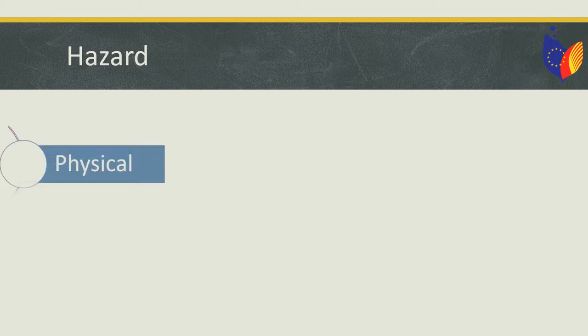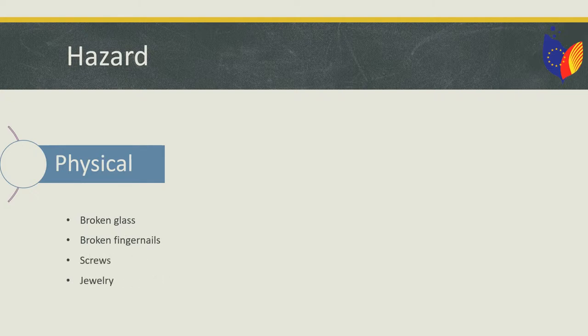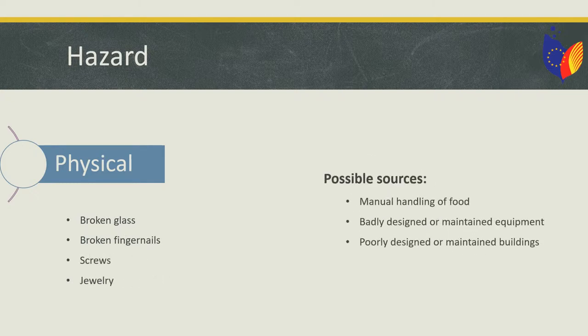Some examples of physical hazards are broken glass or fingernails, screws, and jewelry. While some possible sources of physical hazards are the manual handling of food, badly designed or maintained equipment, and poorly designed or maintained buildings.